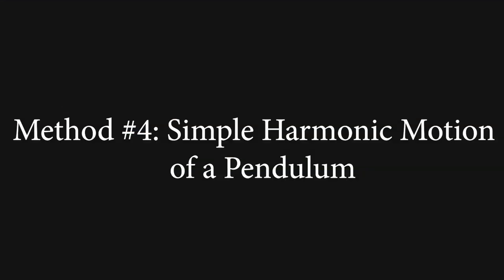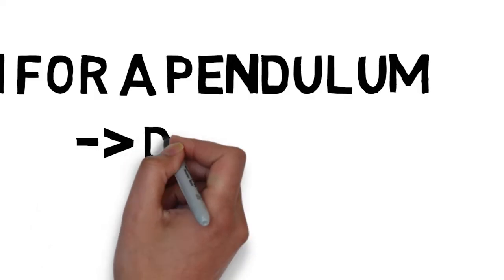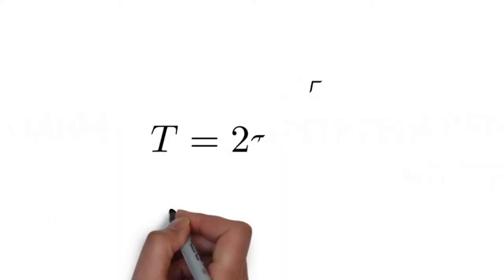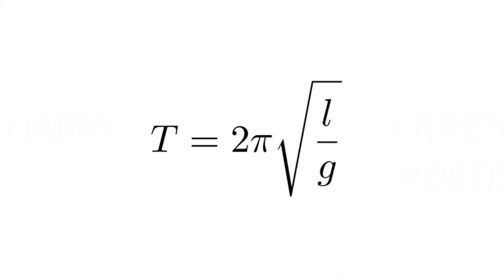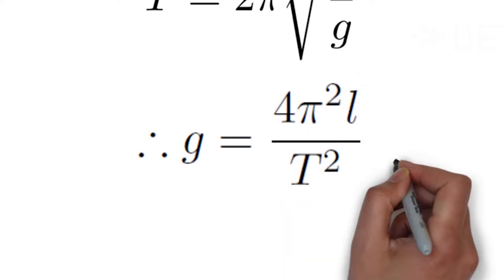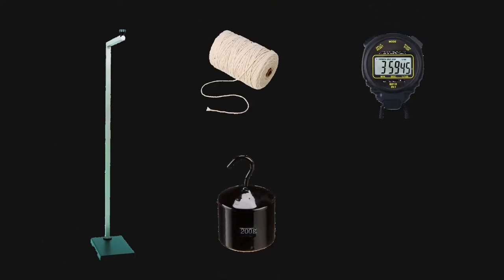For this experiment, we used simple harmonic motion of a pendulum to determine g using various lengths. We used the equation t equals 2π times the square root of l over g. Rearranging by dividing both sides by 2π, squaring, taking the reciprocal, and multiplying by l, we get g equals 4π² times l over t squared. We measured the lengths of strings and their corresponding periods to obtain g. To conduct the experiment, we used a pendulum stand, strings, a mass, a stopwatch, and a meter stick.